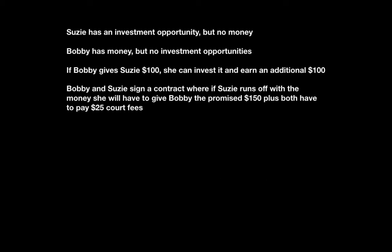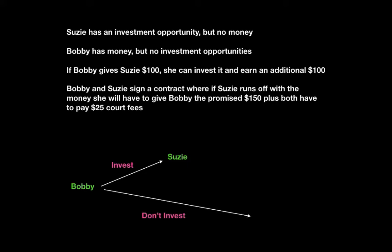We can change this scenario by writing a contract. Suppose Bobby and Susie sign a contract where if Susie runs off with the money, she'll have to give Bobby the promised $150, plus both parties pay $25 in court fees. Bobby again has the choice to invest or not invest. If they cooperate, they both get the 50-50 return. If Susie appropriates, the contract forces her to pay Bobby the promised money, and after subtracting court fees, they both net $25.